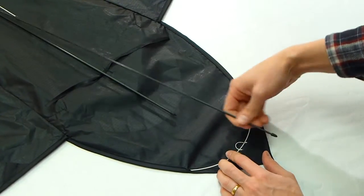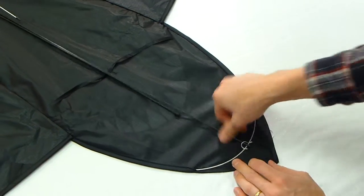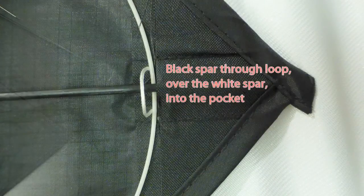The last thing to do for the head is to replace the long black spar that we took out earlier. Through the loop, over the white spar, and into the pocket.